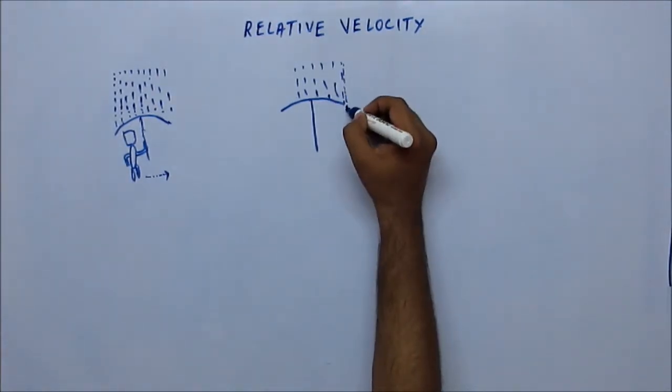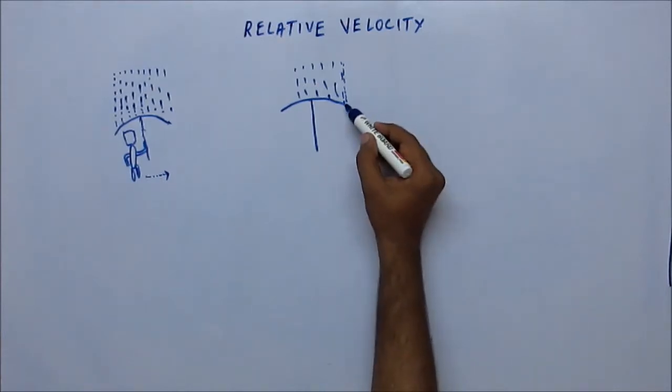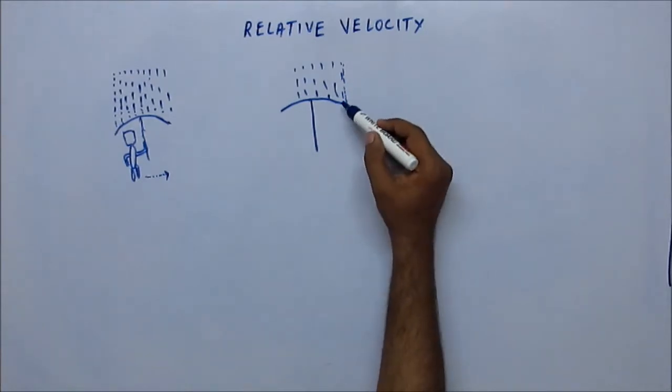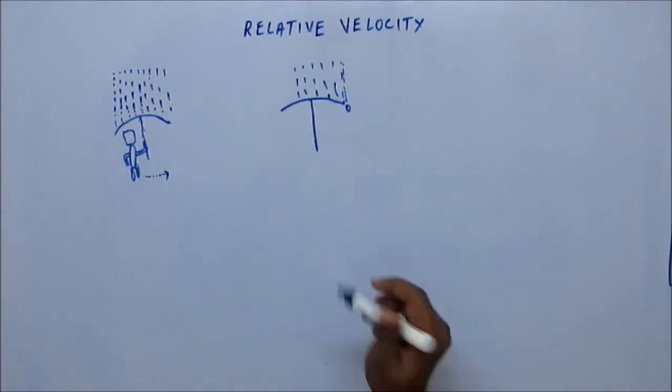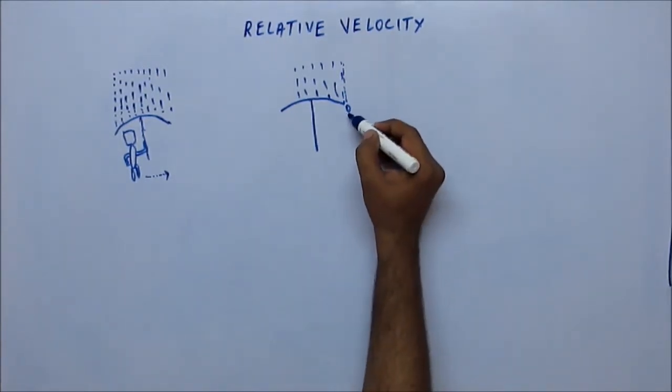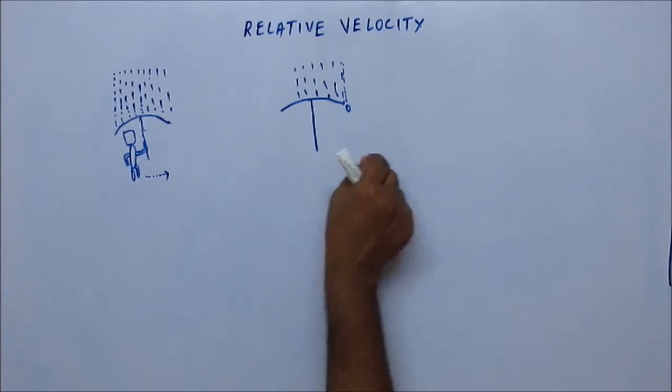Consider this droplet of rain which is just outside the periphery of the umbrella and is going to fall vertically downward. But the thing is Tom is moving, so as the rain comes down, Tom also goes towards the droplet.